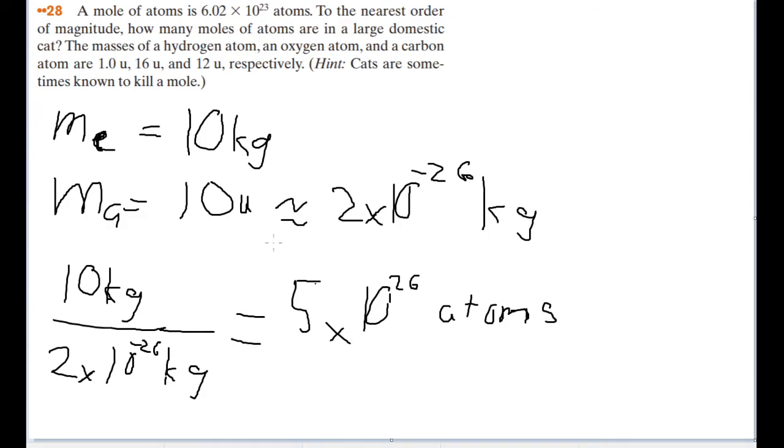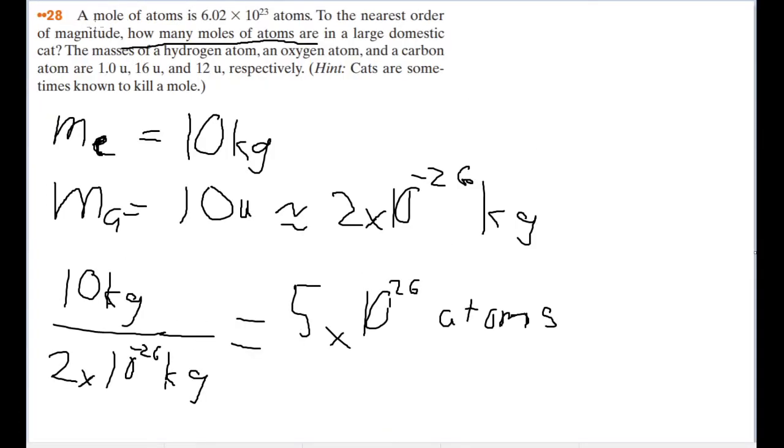But where does that get us? Because the question asks us to find not the number of atoms in a large domestic cat, but the number of moles of atoms. Now, what does that mean? As the question states in its first sentence, a mole of atoms is equal to that many atoms, 6.02 times 10 to the 23rd atoms. This is known as the Avogadro constant, or Avogadro's number. And the number is often used in chemistry. But we don't need to know those details. The point is, a mole is that many atoms.